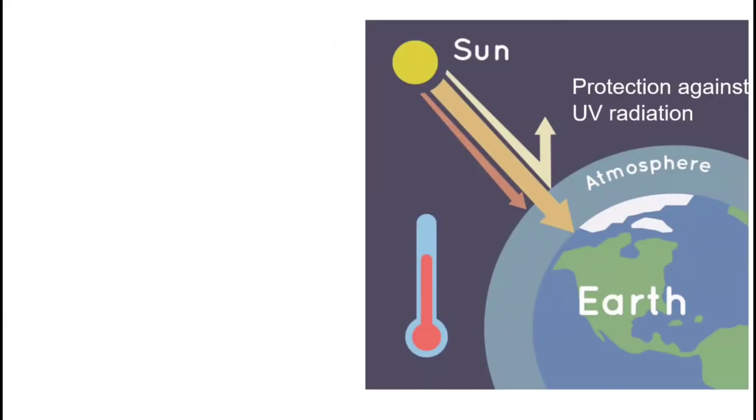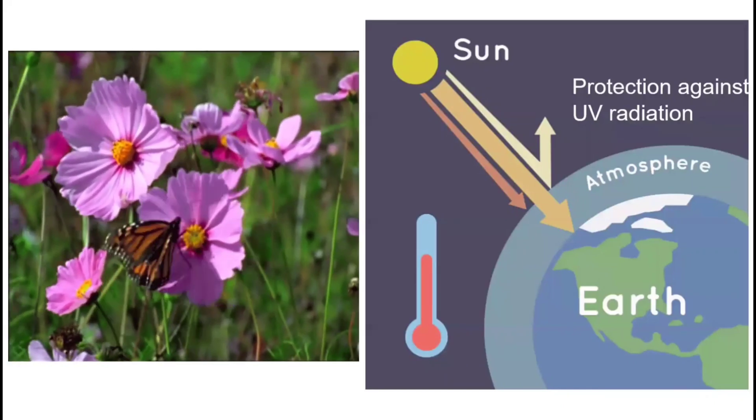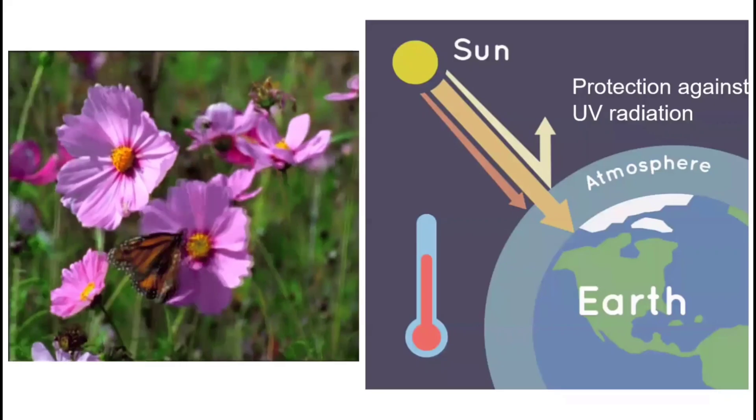The atmosphere serves many functions. It offers protection against UV radiation, helps hold in heat to warm the planet's surface, and contains oxygen and carbon dioxide required for animals and plant life.